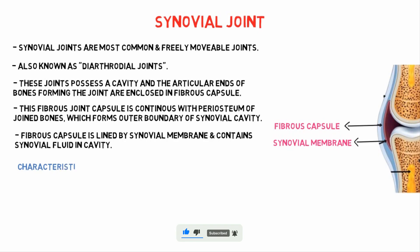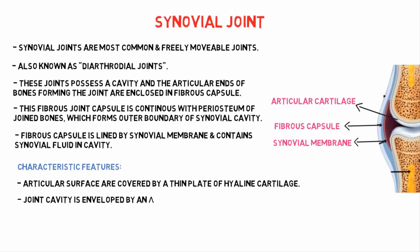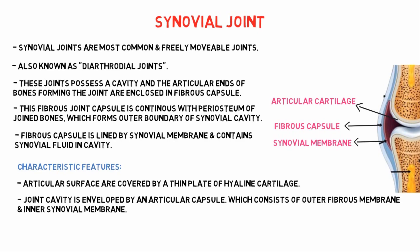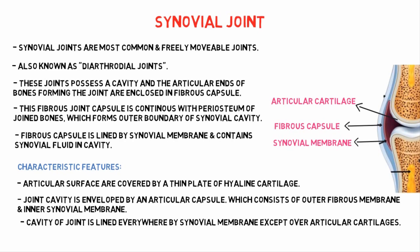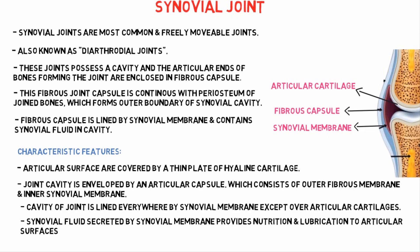Coming to the characteristic features of synovial joints. Articular surfaces are covered by a thin plate of hyaline cartilage. The joint cavity is enveloped by an articular capsule which consists of an outer fibrous membrane and an inner synovial membrane. The cavity of the joint is lined everywhere by synovial membrane except over articular cartilage. Synovial fluid, secreted by the synovial membrane, provides nutrition and lubrication to the articular surface.